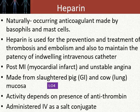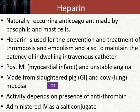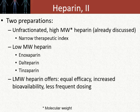For heparin to work in our bodies, the patient's endogenous antithrombin molecules must be present. If the patient is deficient in antithrombin, heparin will not work at all. Heparins are administered intravenously — sometimes conjugated to a salt to improve stability — and can be injected into the vein. They are not orally administered.